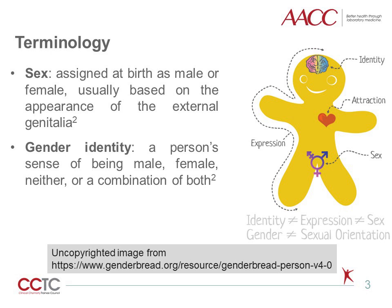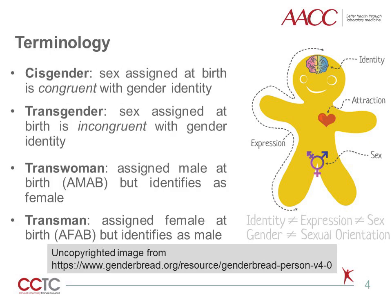Gender expression can be through choice of name, pronouns, hairstyles, clothing, or voice, among other things. Cisgender individuals are those for whom assigned sex at birth is congruent with their gender identity. Transgender individuals are those for whom assigned sex at birth is incongruent with their gender identity.